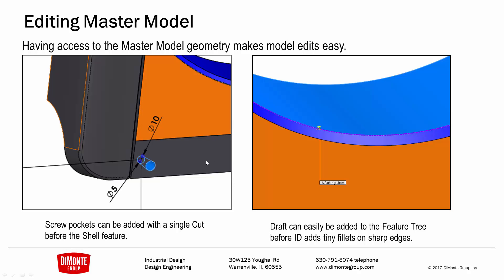Having access to the master model is a huge time saver. In this situation, I had to add some screw pockets, which were easily done by rolling above the shell feature and adding the screw pocket as a cut — the shell automatically generates the backside of the screw pocket. There was also some missing draft on a part that had tiny fillets on it. Without access to the master model, I would have to use the delete face tool or other techniques to remove the fillets before adding draft. With the master model, I simply open it, roll the feature tree above the fillet, add the draft using the parting line draft tool, and save my changes. The new drafted face is then represented in the child part when I unlock the references and let the part update.